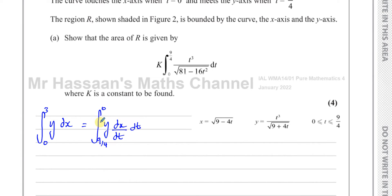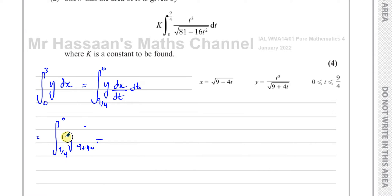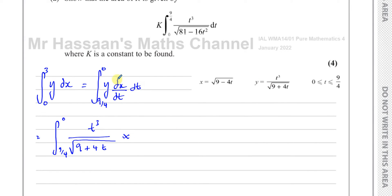Now the limits are in terms of t. We need everything inside the integral in terms of t as well. We already have y in terms of t — that's given to us. So I have my integral with 0 on top and 9/4 at the bottom, and the integrand is t³ divided by the square root of 9 + 4t. That's the y part, and now we multiply by dx/dt.